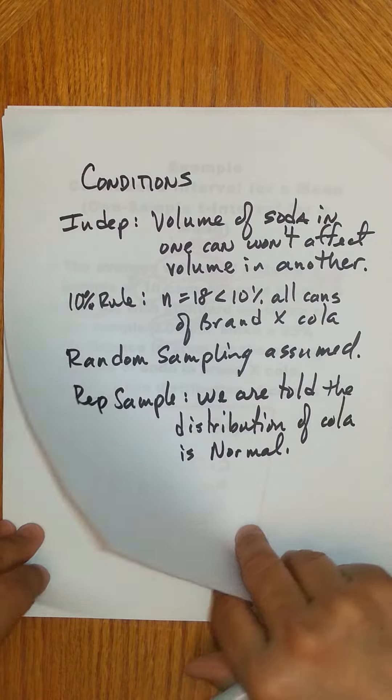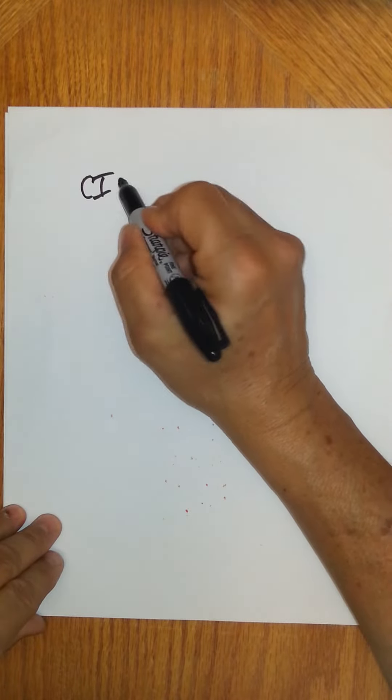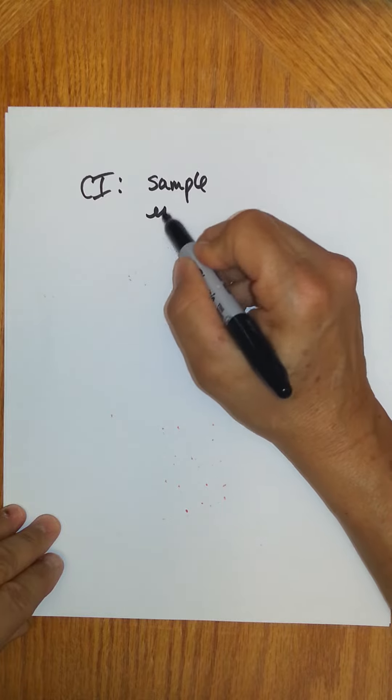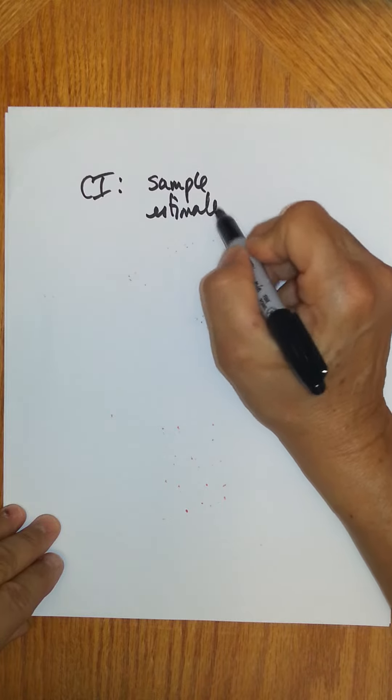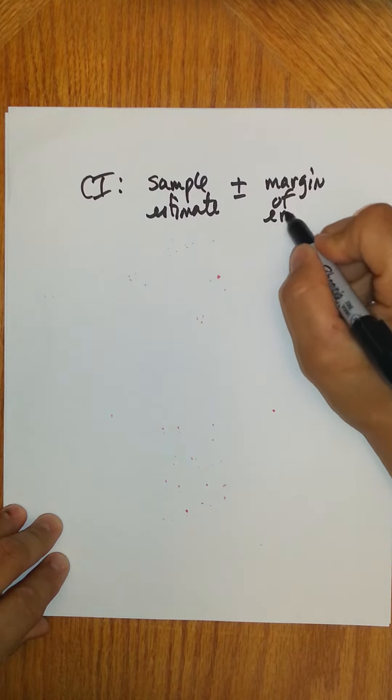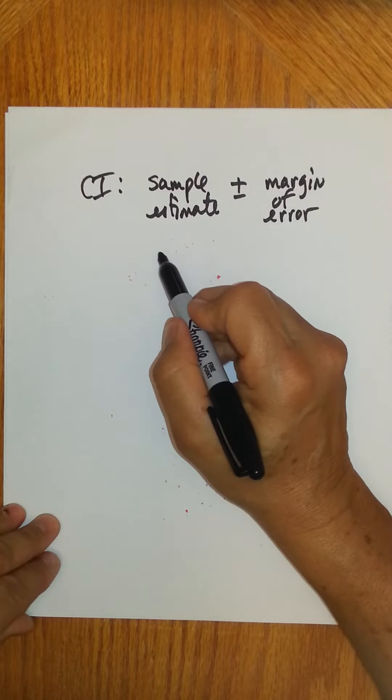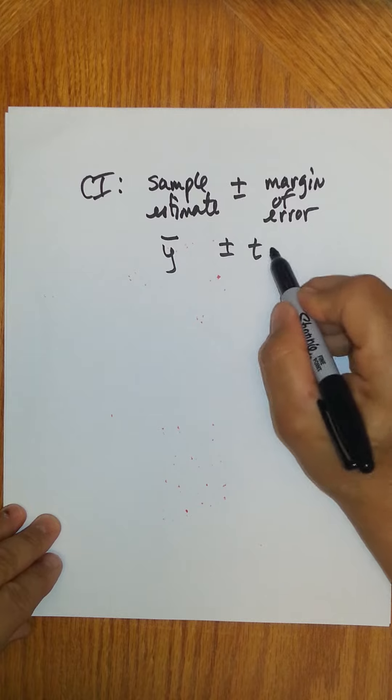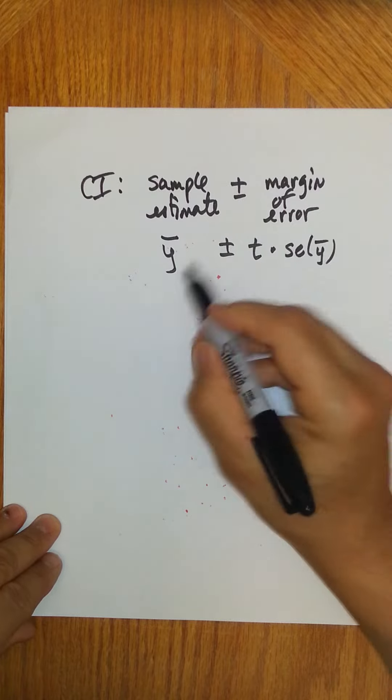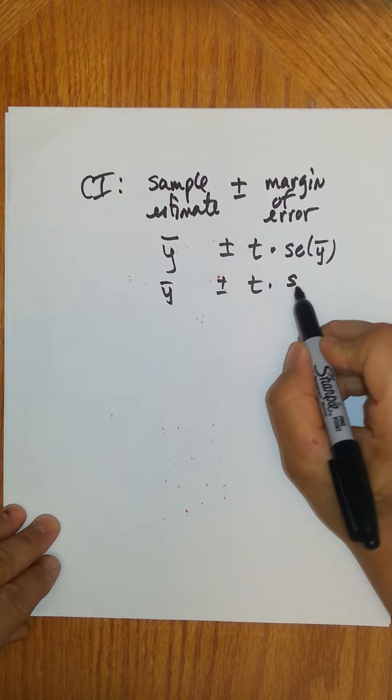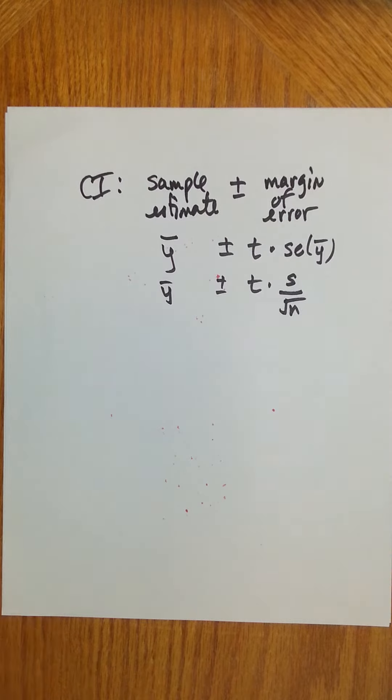Now we want to make a confidence interval. Remember to make a confidence interval, always, regardless of what it is we're testing, we want to start with a sample estimate and then add or subtract a margin of error. In our case, we want to start out with y bar, a sample mean, plus or minus t times standard error, and this is going to be s, the standard deviation of the sample, over square root of n.